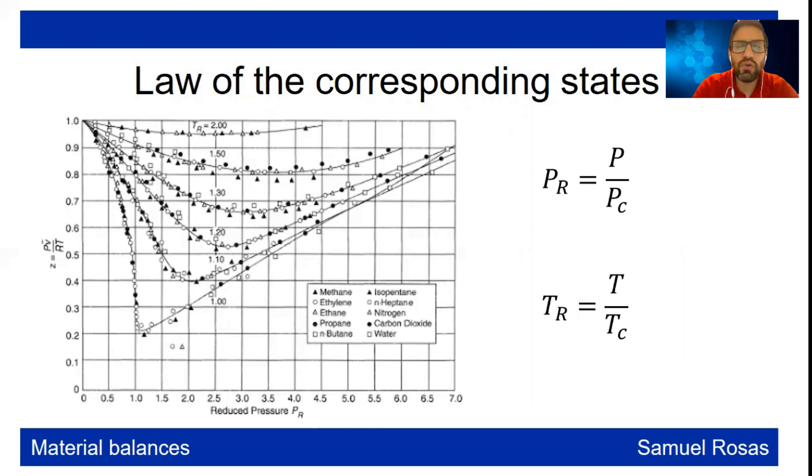But if you normalize or divide the pressure and temperature over the critical pressure and the critical temperature, you are going to have what we call the reduced pressure and the reduced temperature. Then all the gases are going to start to behave similarly, and that is what we call the law of corresponding states.